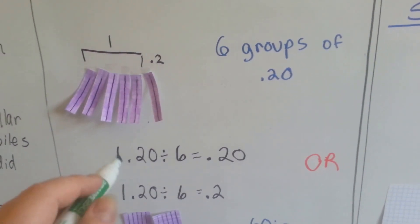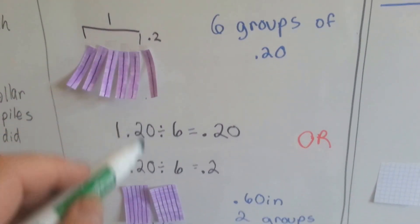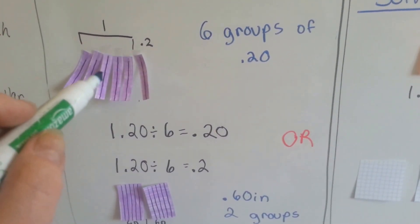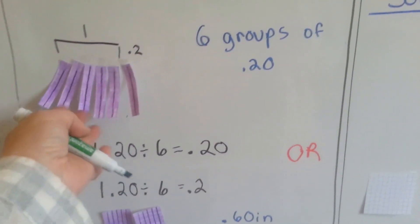So does this equation model this one, or does it model this one down here? So is 1.20 divided by six this one, where it's divided into six pieces?